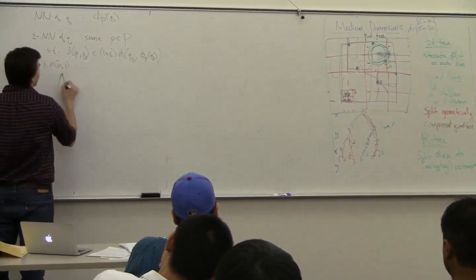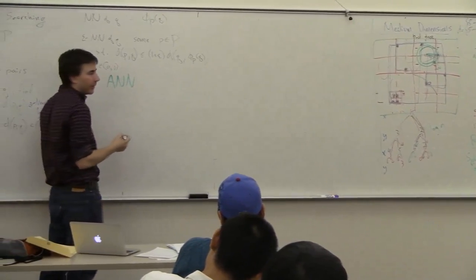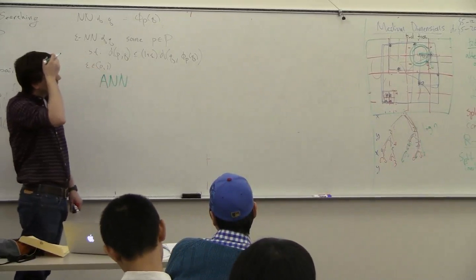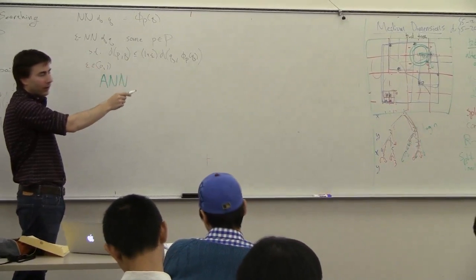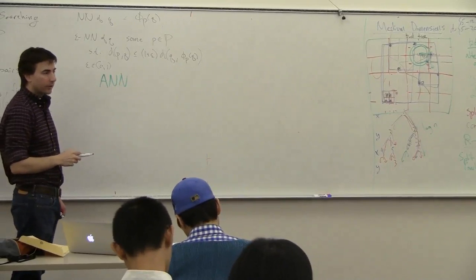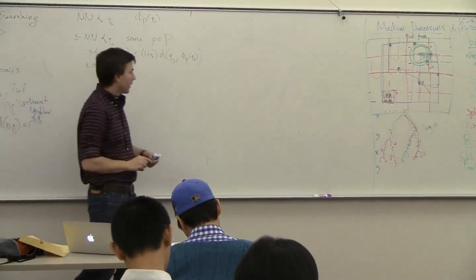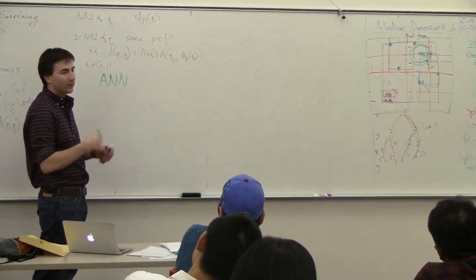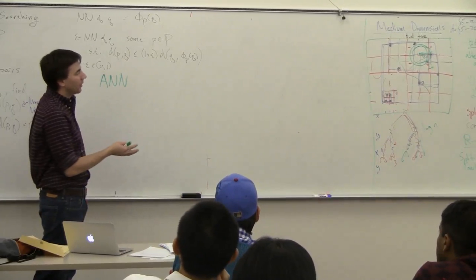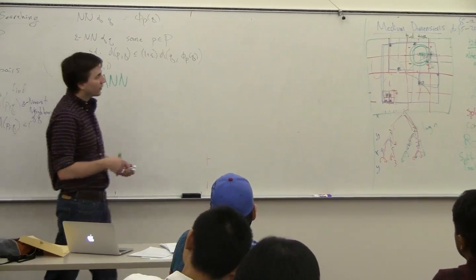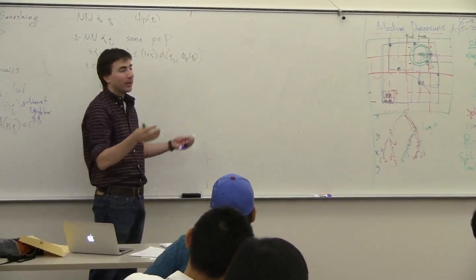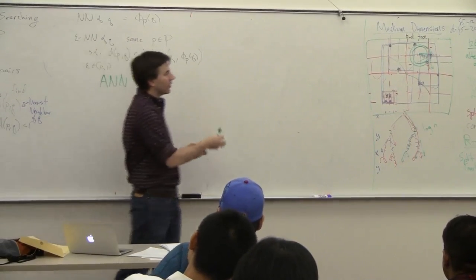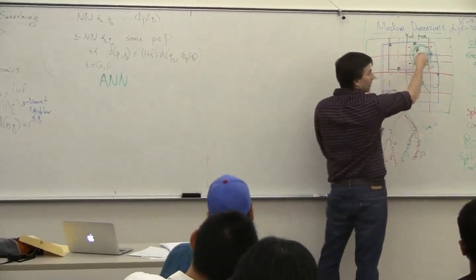There's a library called the ANN library — approximate nearest neighbor — which you can find by searching 'ANN' in Google. It builds a data structure based on a KD-tree and finds the approximate nearest neighbor quickly. The developer David Mount says some people find it stops working after 10 or 12 dimensions, while others get up to 20 or even higher. By doing this approximation, you can do a lot better even without changing the underlying data structure.